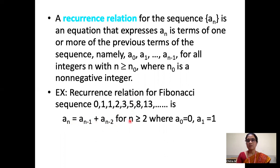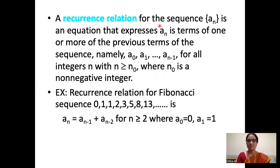This is true for all positive integers n greater than or equal to 2, with initial conditions a_0 equals 0 and a_1 equals 1. Here we have represented the Fibonacci sequence as a recurrence relation — expressing a term in the sequence using previous terms.